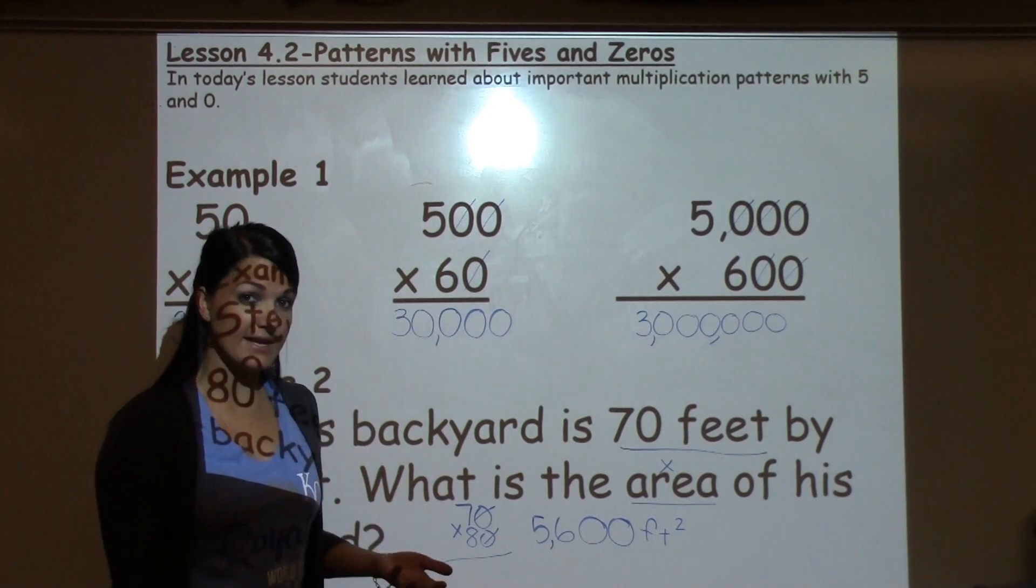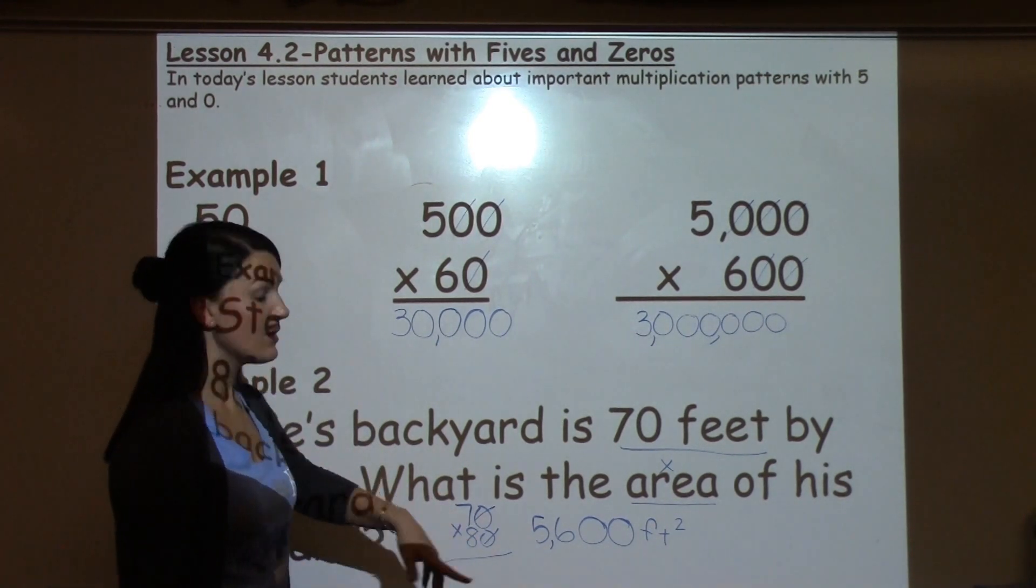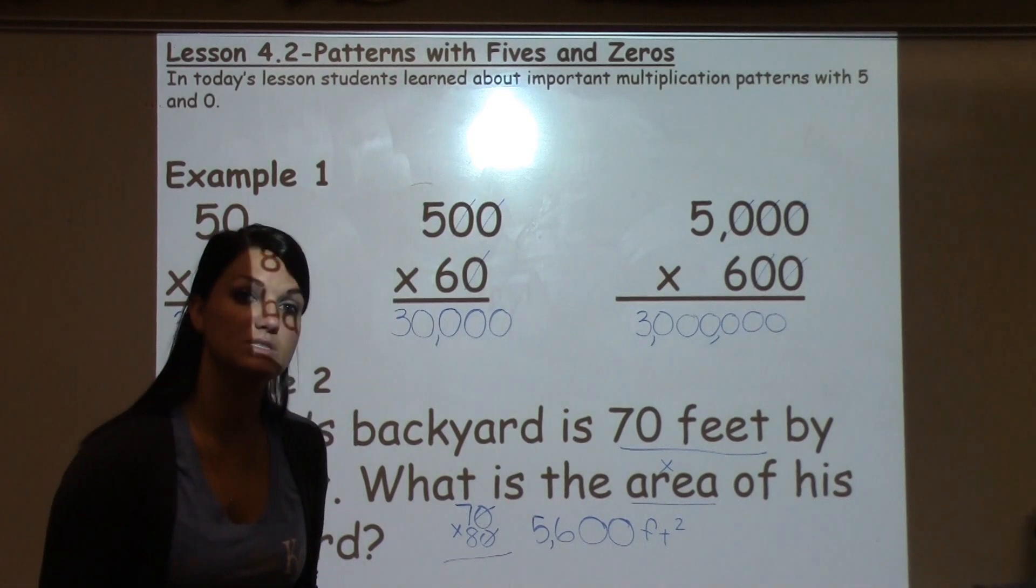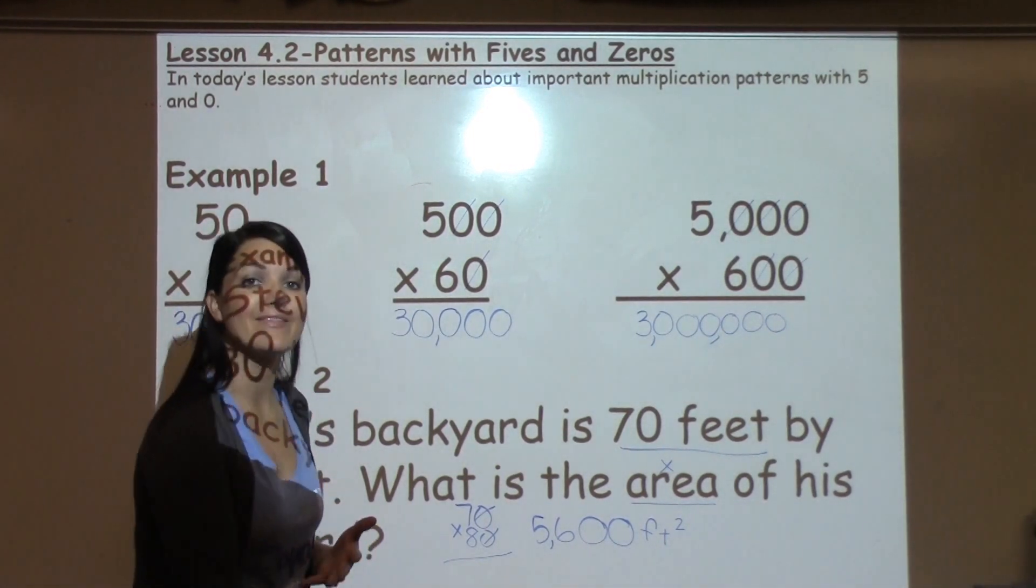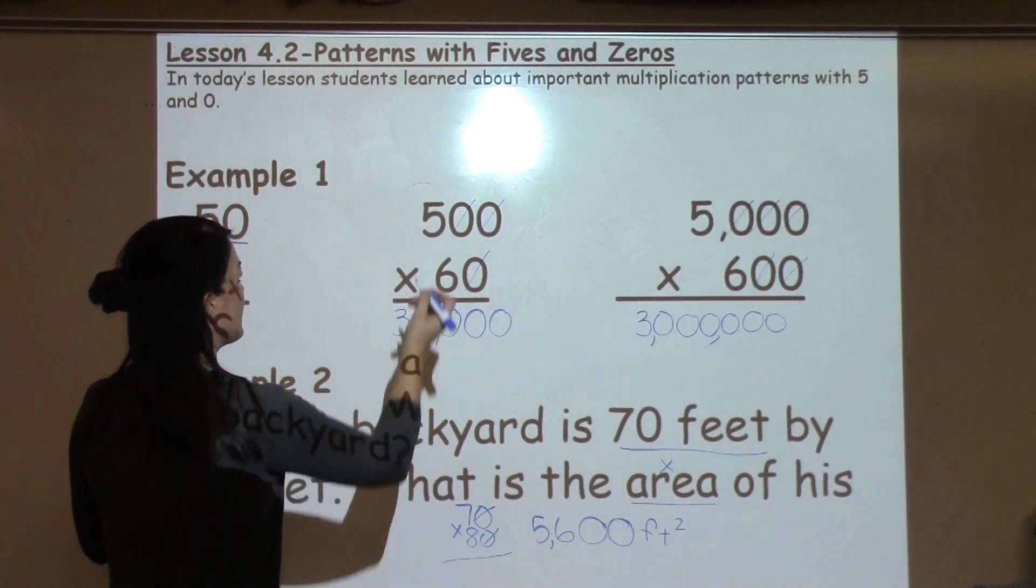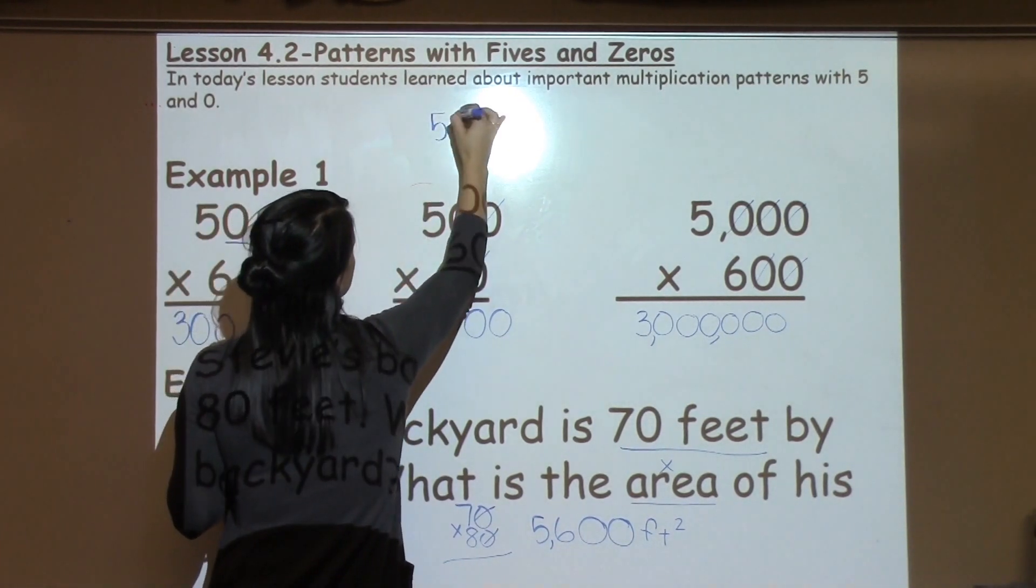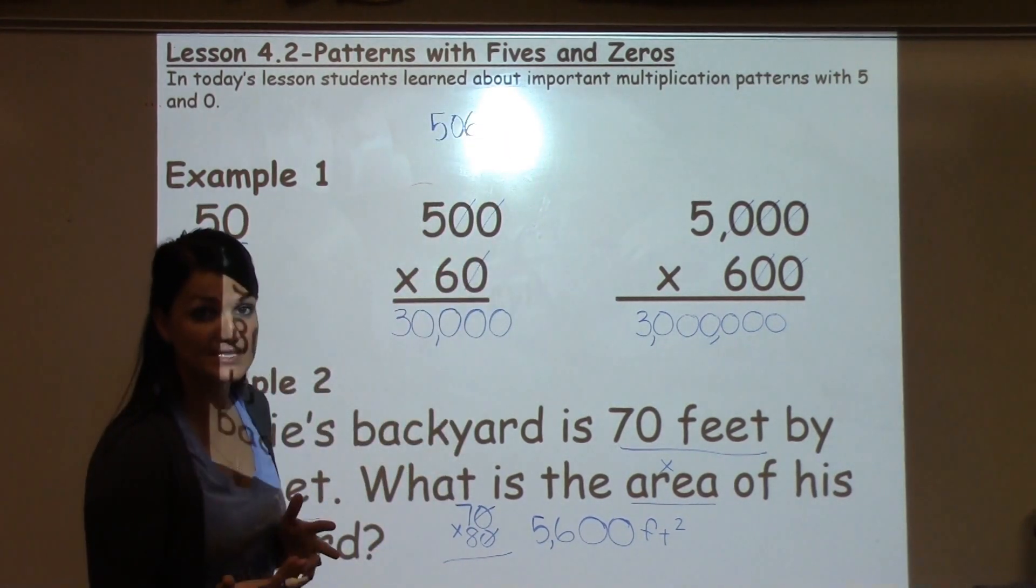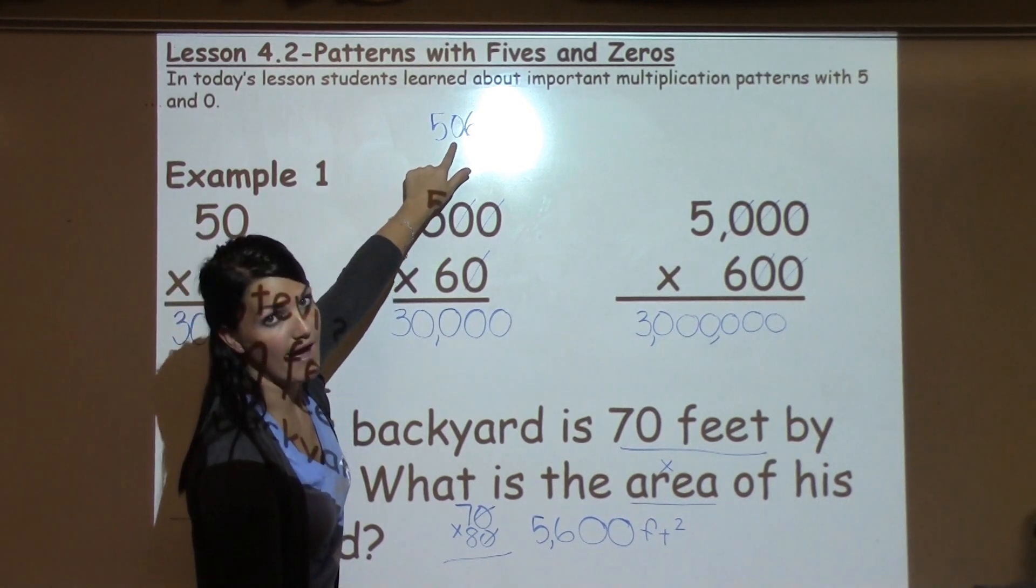One thing that it's important to remind your student of, when they're working with this 0s trick and taking those 0s off, it only works when 0s are on the end of a number. If I had a number such as 506 times something, I would not be able to take this 0 off.